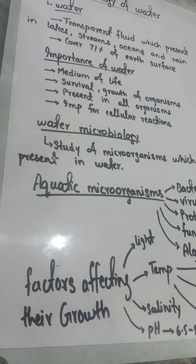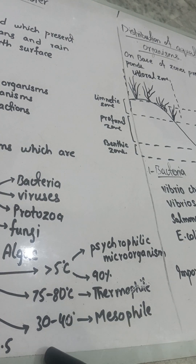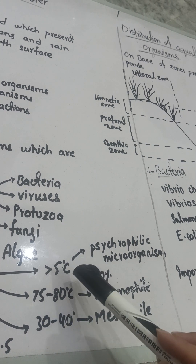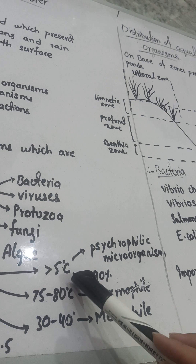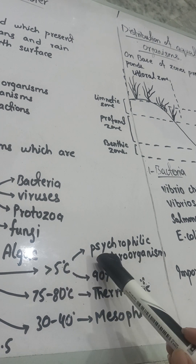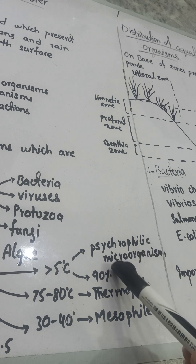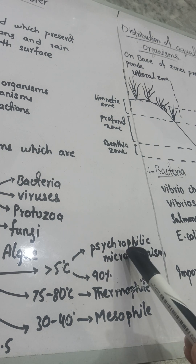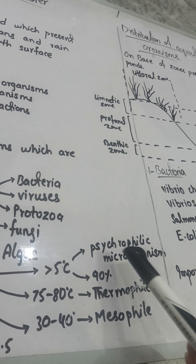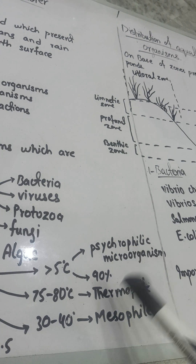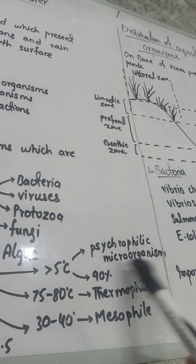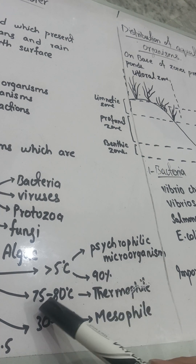The second important factor is temperature. Various organisms in water need different optimum temperatures at which they show their best growth. Some marine organisms need a temperature less than 5 degrees centigrade — these are called psychrotrophilic microorganisms. They need very low temperature and grow best at that temperature. About 90 percent of marine organisms are psychrotrophic.